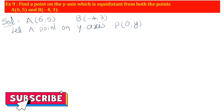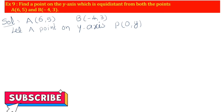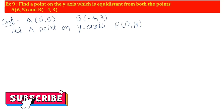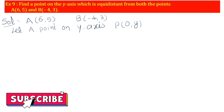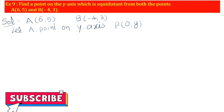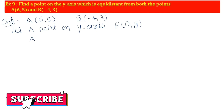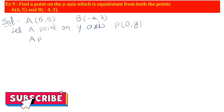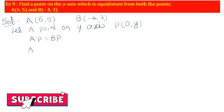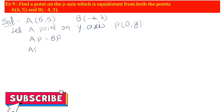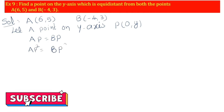From the data, P point is equal distance from A and B. Therefore, AP is equal to BP. Next, squaring both sides: AP² = BP².